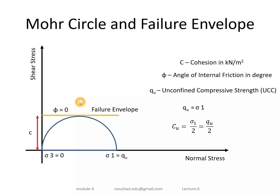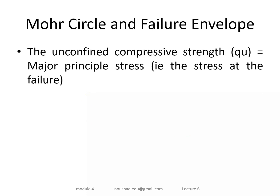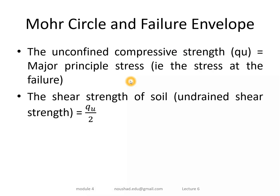For the UCC test on clay, the Mohr circle and failure envelope give cohesion and friction angle. Since the friction value phi equals zero and sigma 1 equals Q_u, we get C_u equals Q_u by 2. The shear strength equation is S equals C plus sigma times tan(phi). This is the standard shear strength equation.